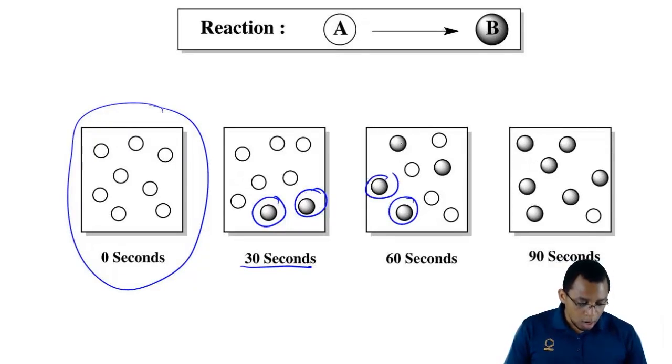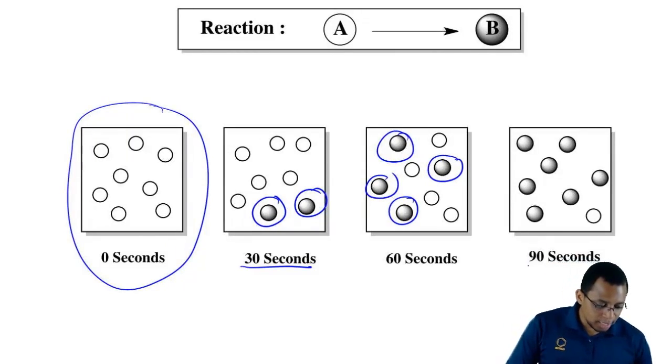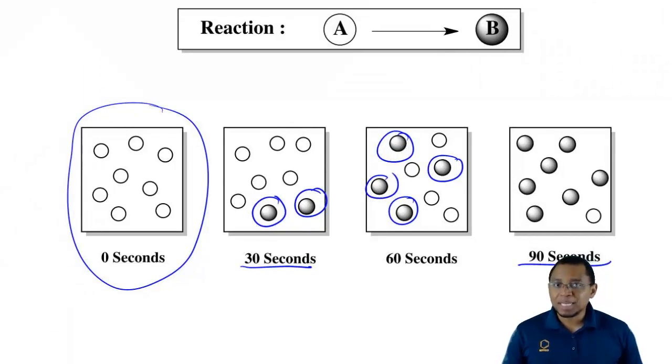Now the more our product forms, the less reactants we're going to have around because remember, the products are made from our reactants breaking down. Eventually, our reaction reaches completion.